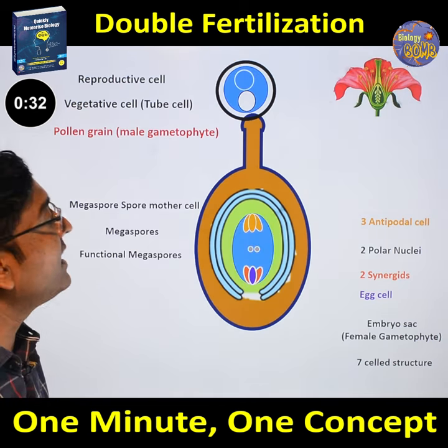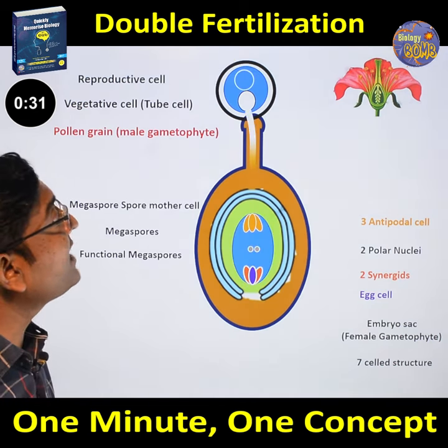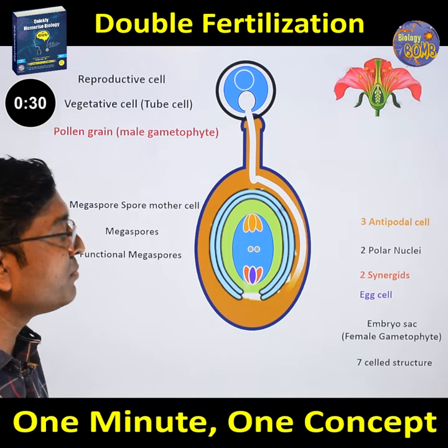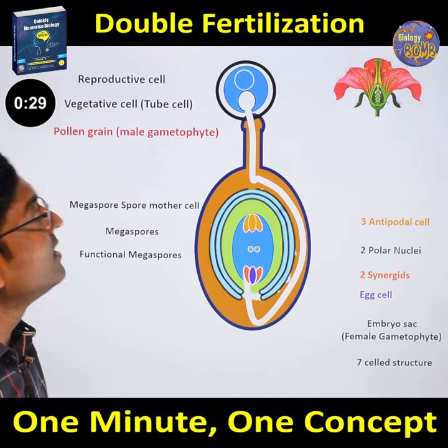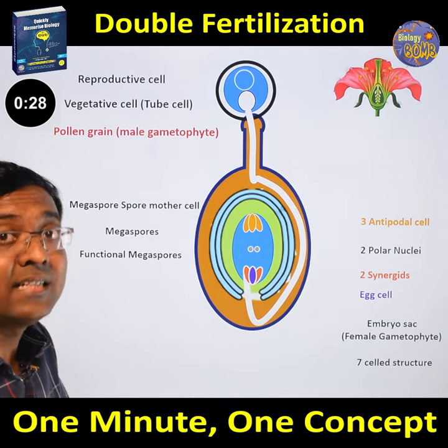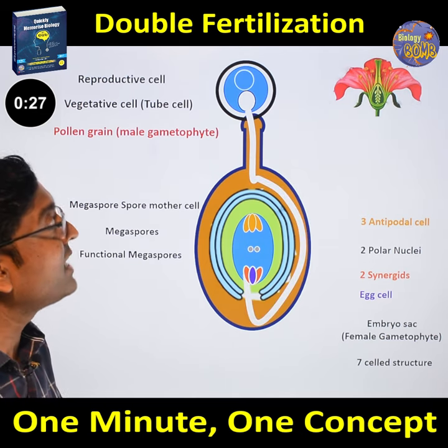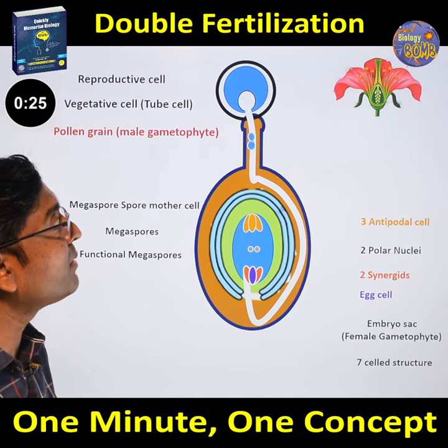The vegetative cell gives rise to the pollen tube. And the reproductive cell divides to form 2 sperm cells.